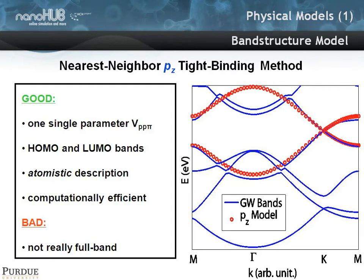The band structure model being used here is a very simple one — the nearest neighbor PZ tight binding orbital method. The dispersion corresponds to the one shown here in red, and underneath in blue is shown a GW calculation of a graphene nanoribbon. We're only doing reasonably well in terms of the band structure at the crossover point where the HOMO and LUMO bands meet. The good thing is we have an atomistic description where we can represent each atom explicitly, and it's computationally efficient because it's really only a single parameter with a single orbital.